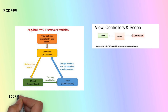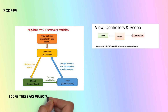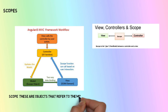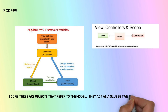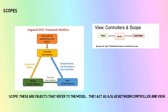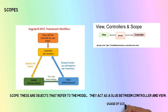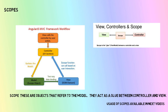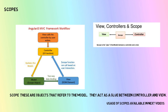The scope is the binding part between the HTML view and the JavaScript controller. The scope is the actual thing that is available to both the view and the controller. When we make a controller in AngularJS, we pass the scope object as an argument, and it acts like a glue between the controller and the view. We will see all the practical scenarios about scopes in the next videos.